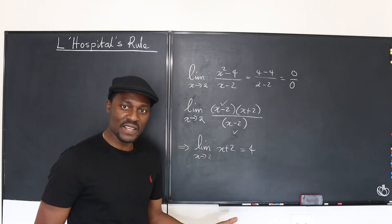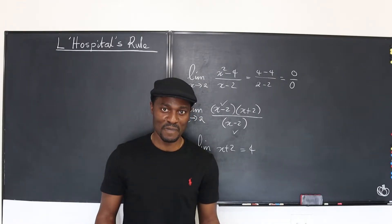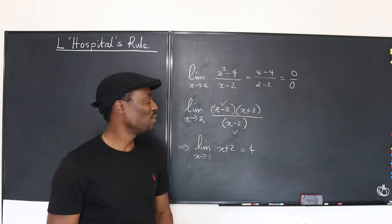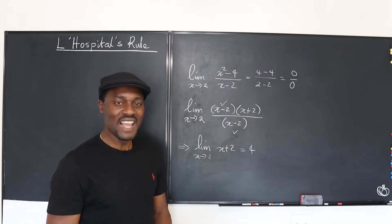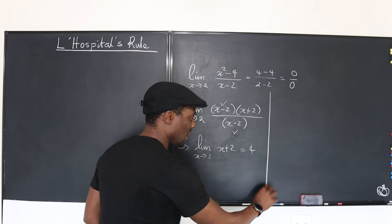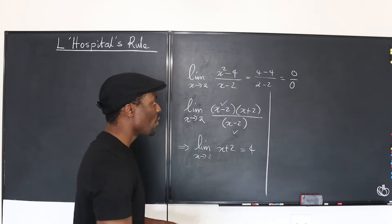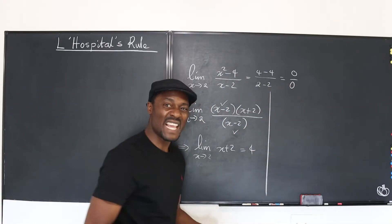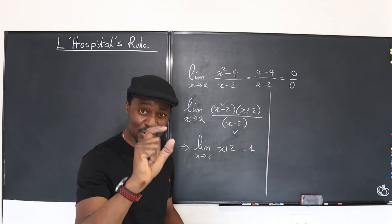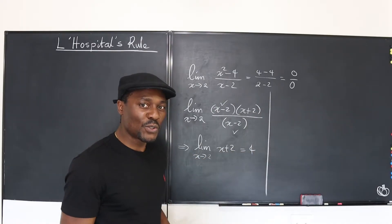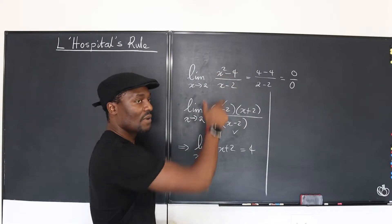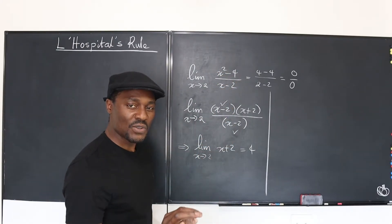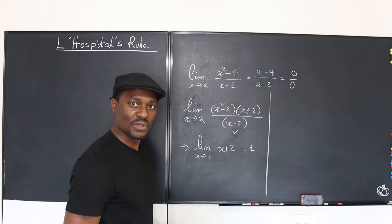Now I have done this without using L'Hôpital's rule. But with L'Hôpital's rule, I would have fewer steps. I don't have to do so much work. Now, what will L'Hôpital's rule tell you? L'Hôpital's rule says when you do the first direct substitution and you discover that you have the indeterminate form, which is usually in this case 0 over 0, what you should do is differentiate the function on top and differentiate the function under. And whatever you get, do the direct substitution.